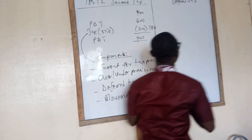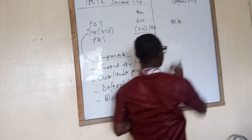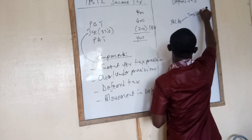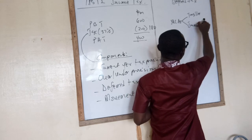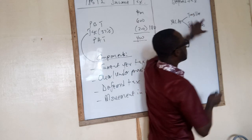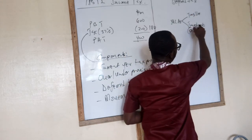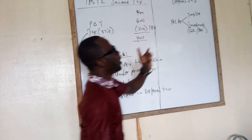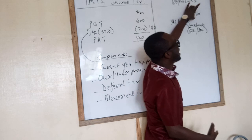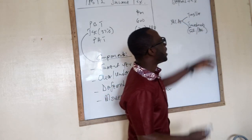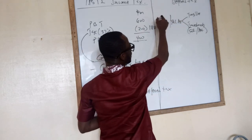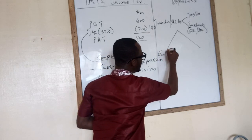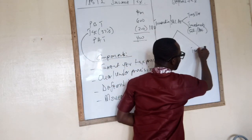The issue about deferred tax arises because of the treatment of non-current assets — both tangible non-current assets as well as investments of a company, such as investment in a subsidiary or investment in an associate. When it comes to how we account for tangible non-current assets and investments, and sometimes other transactions, the way the entity carries it is going to be different from the way the tax authority views it.